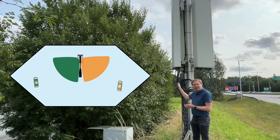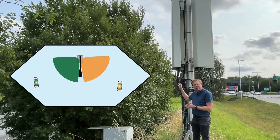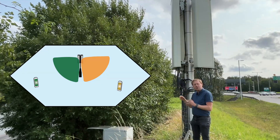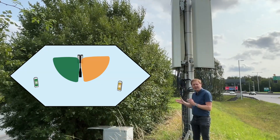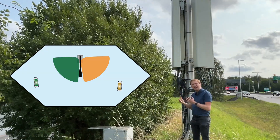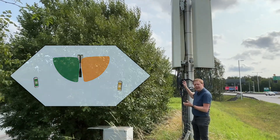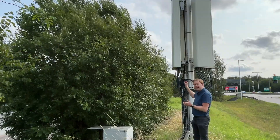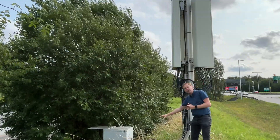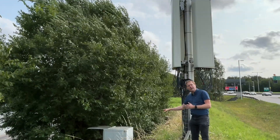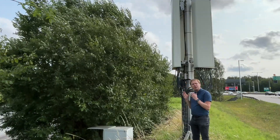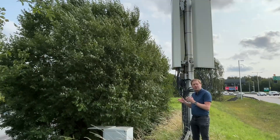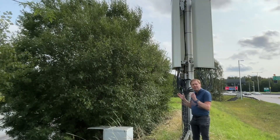These antennas are always transmitting in the same direction because they are so-called passive antennas that can't change anything. They are not even generating the signals — instead there are these black cables going down to white boxes underneath here that are generating the signal to be transmitted.